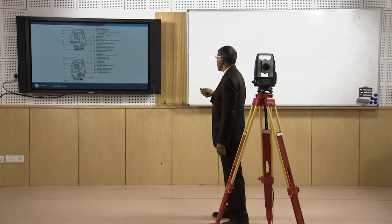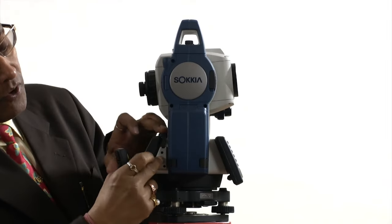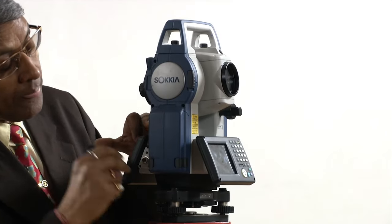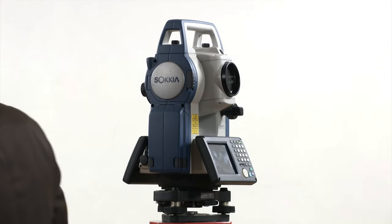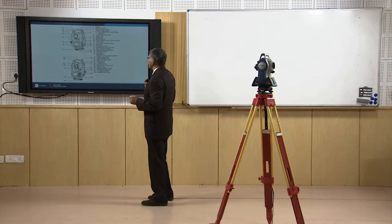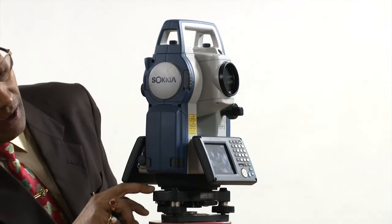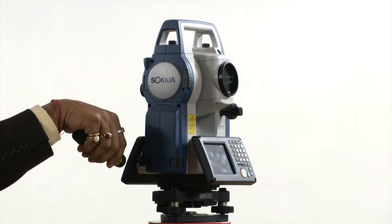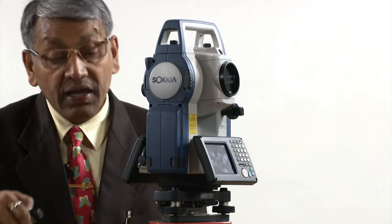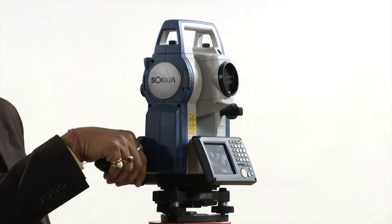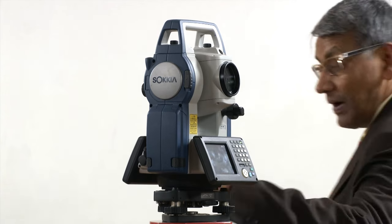There is a serial connector here, which is generally used to download or upload data — to download data from the instrument to a computer, or sometimes from the computer to the instrument. There is also a circular bubble which indicates whether our instrument is level or not; if it is level, the circular bubble will be at the center.